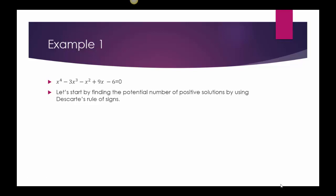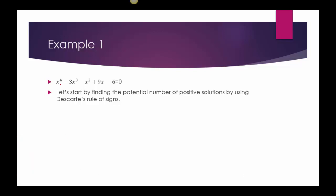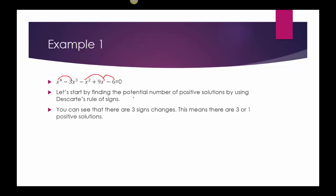To do that, we can look at Descartes' rule of signs and just notice how many sign changes we see. This goes positive to negative — there's a sign change. That's the same, but negative to positive is a sign change, and positive to negative is another one. So I can see I have three sign changes, which means I have either three or one positive solutions.